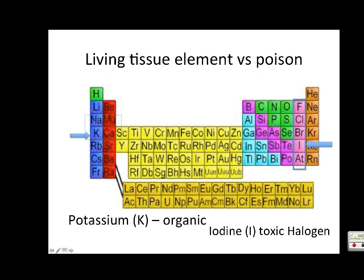Kali, natrium, magnesium, calcium - these four are very common elements in the body, organic and extremely common. They're hardly toxic at all compared to the halogens.